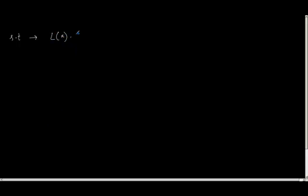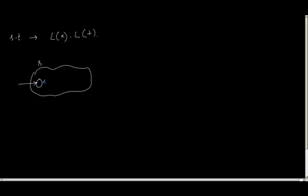Now, what will be S dot T? Suppose S is a regular expression and T is another regular expression. S dot T means the language is made up of by concatenating L of S with L of T. In a similar fashion, suppose this is my finite automata for S. It has a starting state which is Q_S and it has a final state that is F_S.